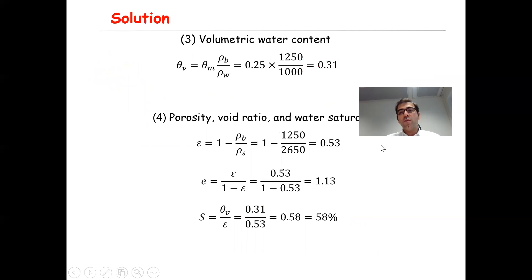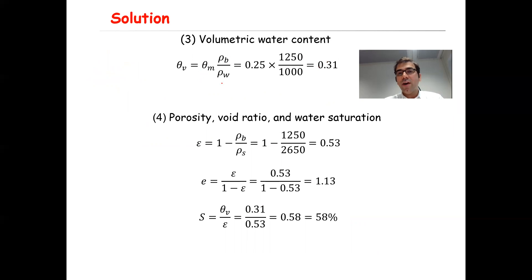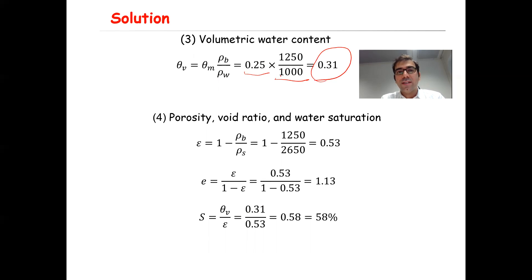The third part was volumetric water content: theta_v equals theta_m times rho_B divided by rho_W. Gravimetric water content calculated in part one was 25 percent, times bulk density 1,250, divided by density of water 1,000. Doing the calculation gives 0.31 or 31 percent as the volumetric water content.